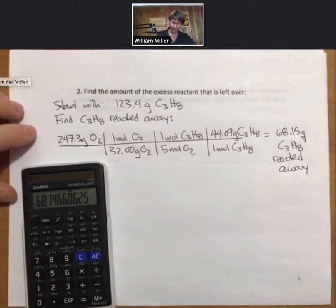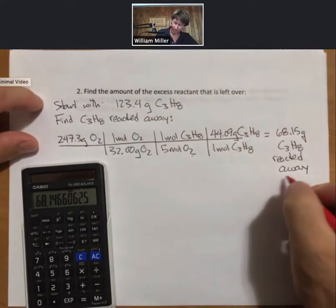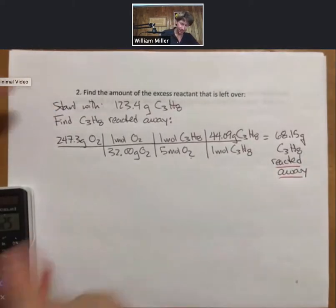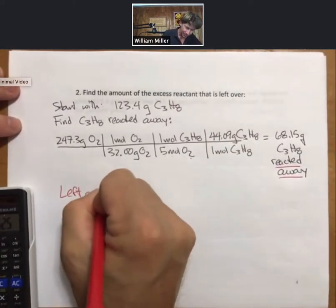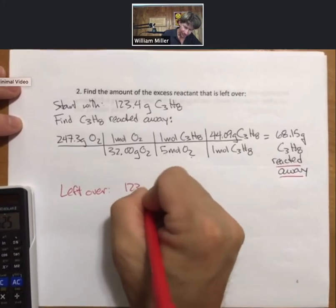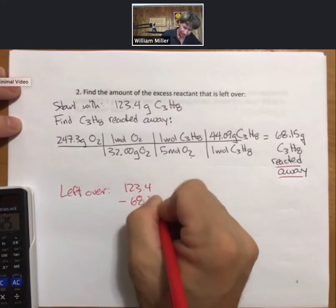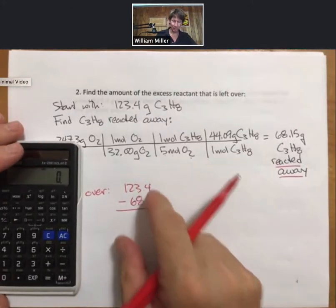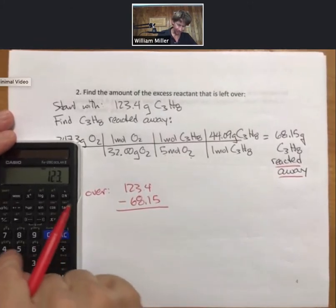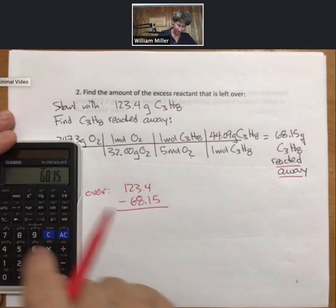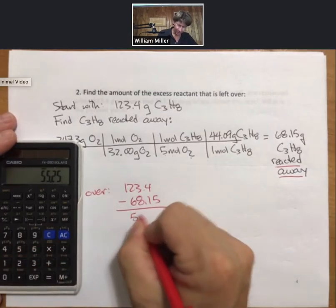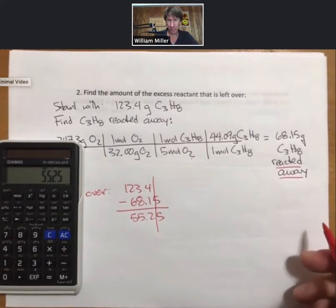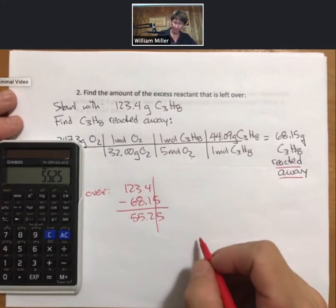All right. So we have start with, we have reacted away. So the leftover amount is start with minus reacted away. And again, I still like to stack them up so I can think of sig figs. 123.4 minus 68.15 I get 55.25 and then we'll always use three sig figs, that's how we know that 55.3 grams are okay.